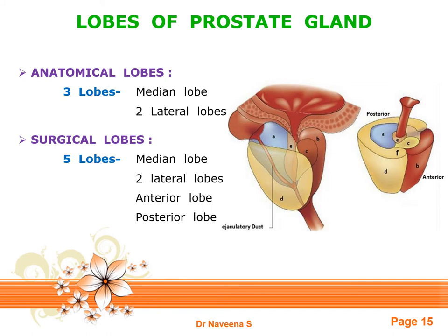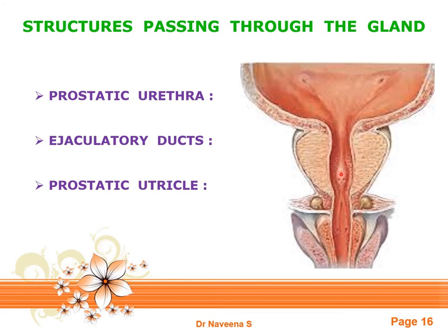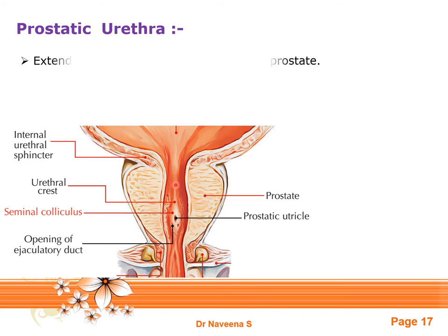The structures passing through the prostate gland are: the prostatic part of the urethra, the ejaculatory ducts, and the prostatic utricle. The prostatic urethra extends vertically within the prostatic parenchyma from its base towards the apex, then leaves the gland by piercing the anterior surface near the apex and continues as the membranous part of the urethra.